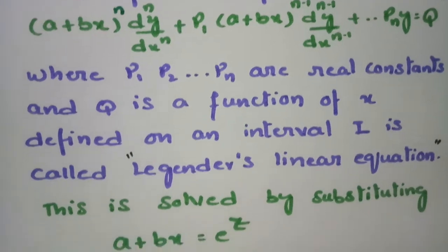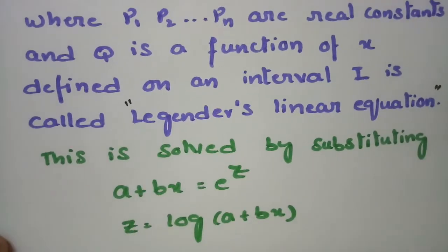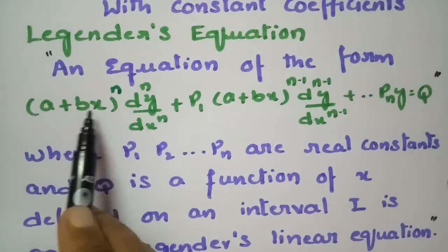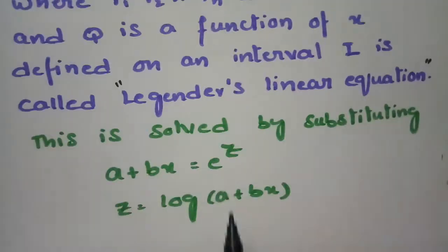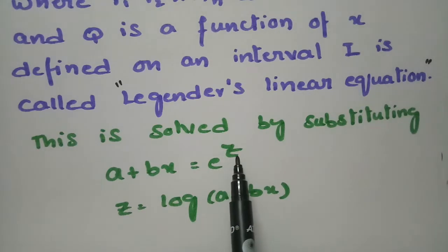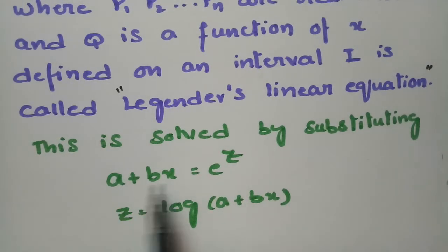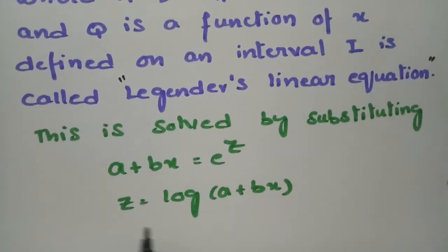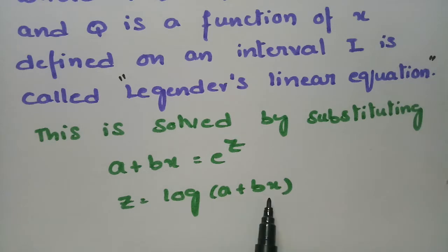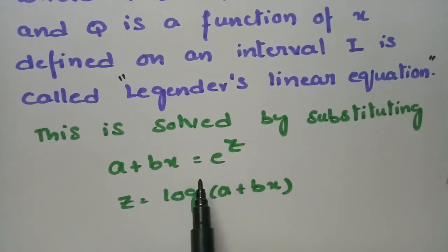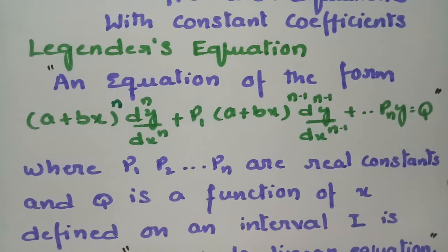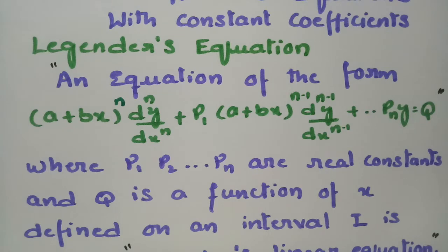This can be solved by substituting: in place of (a + bx) we substitute e^z, and taking log on both sides gives z = log(a + bx). Using this substitution, Legendre's equations can be solved very easily, and here is an example.